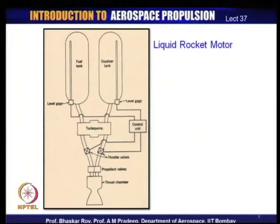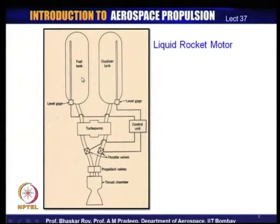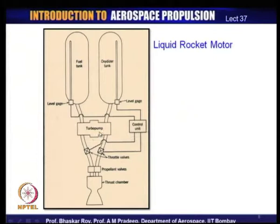This is a very simple configuration of a liquid rocket motor. The rocket combustion chamber is quite small — relatively rather small. A very large space must be allotted for carrying the fuel and oxidizer tanks, which need to be housed within the body of the rocket. You also need to carry the pumps, throttle valves, all the required piping, and the control unit — all this must be carried throughout the rocket's actual flight.